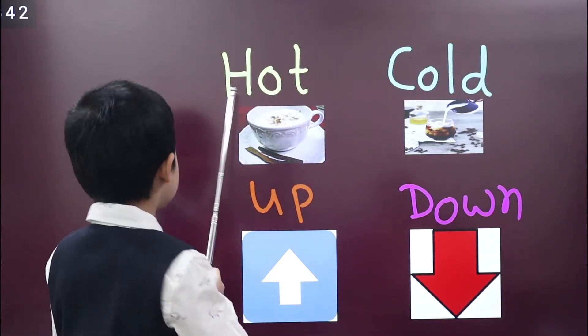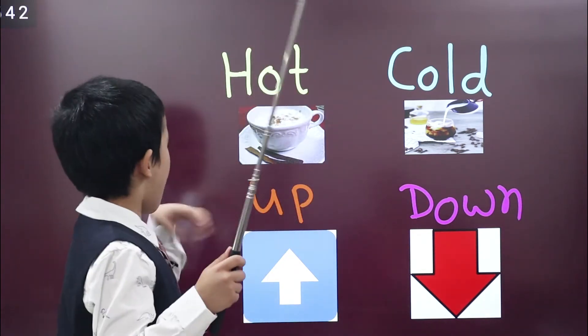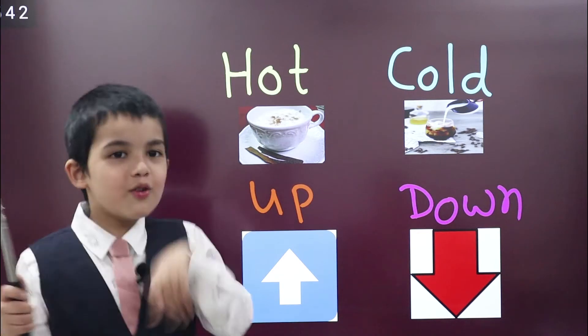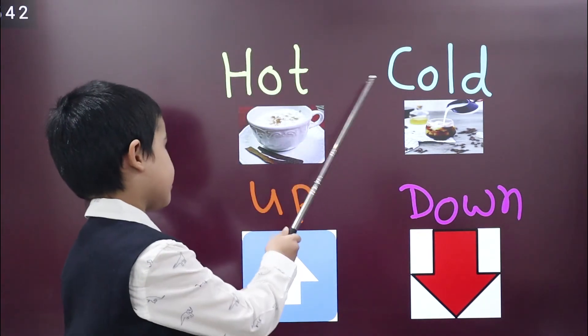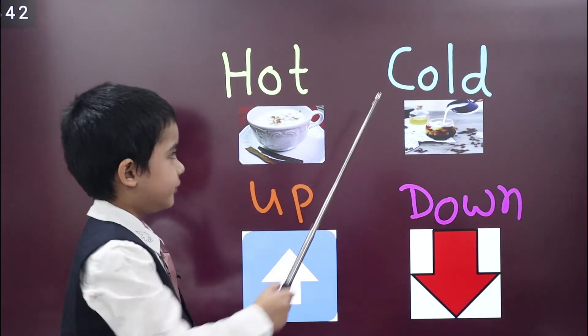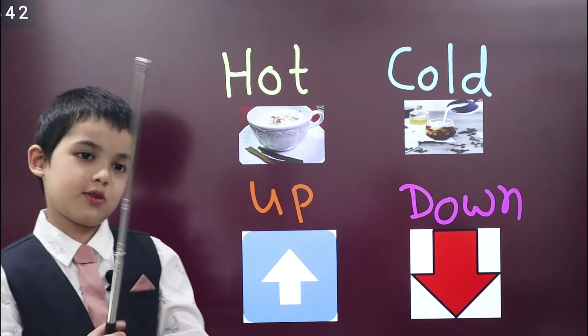This is next word, hot. When mama gives us hot milk, our tongue burns. Opposite of hot is cold. When mama gives us cold milk, I like cold milk.